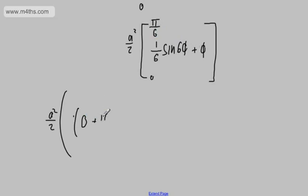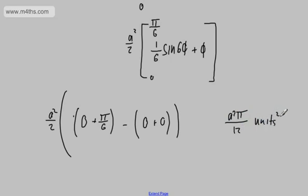And then, of course, this is where the advantage of using 0 comes in. I'm going to get 0 + 0. So what does that leave me with now? It leaves me with a² π, or π a² / 12. And again, it's units squared. And that is the area of one loop.